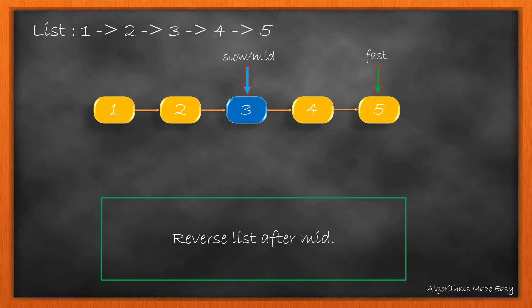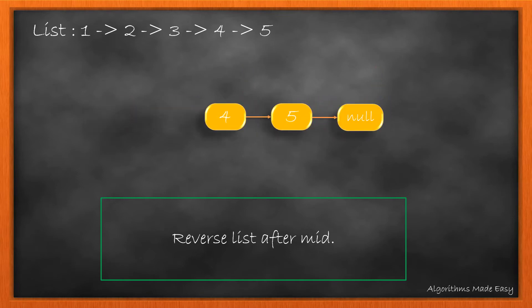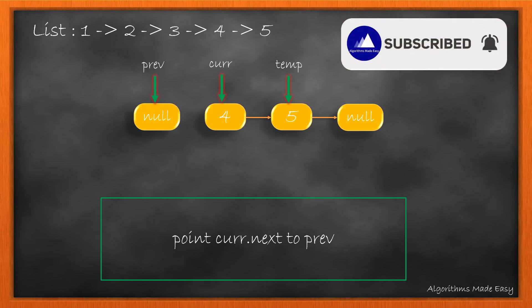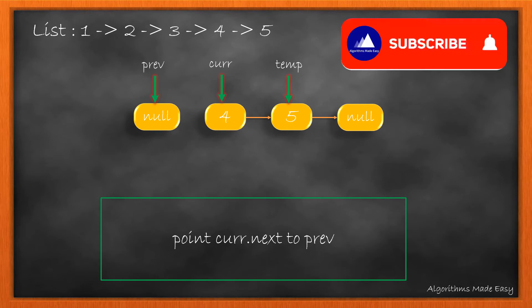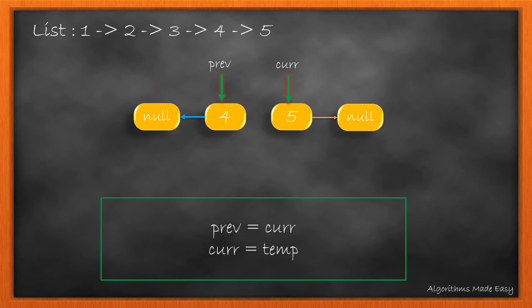Now as the list after the mid must be reversed, we would reverse it. Let's look at the sublist. We take three variables: previous, current, and temp. Initially, the previous points to null that will eventually be the tail node. Current is the head and temp will store the next of head. We then point the next of current to previous and update both current and previous. So current becomes previous and temp becomes our current.